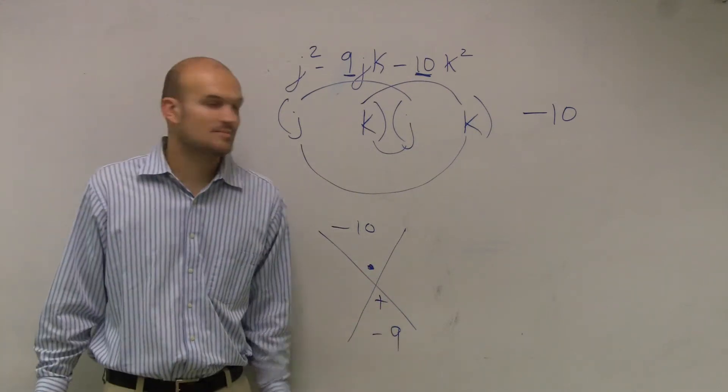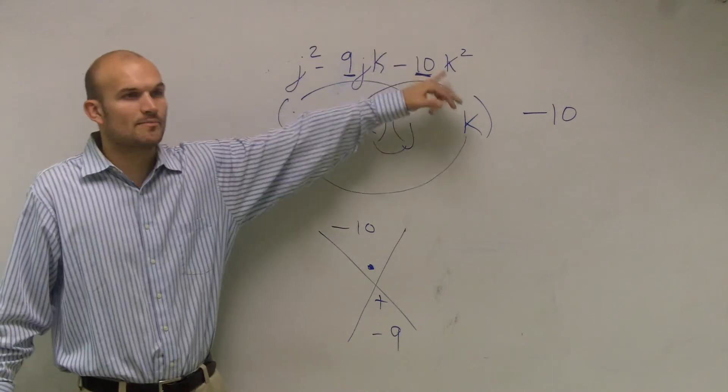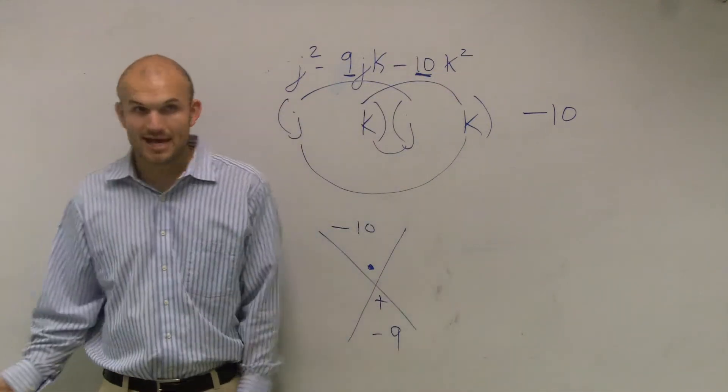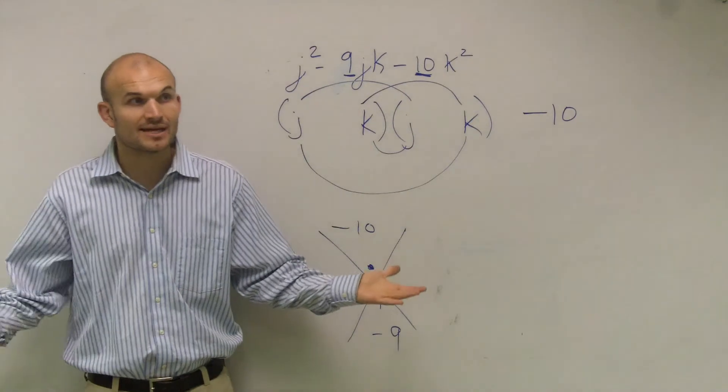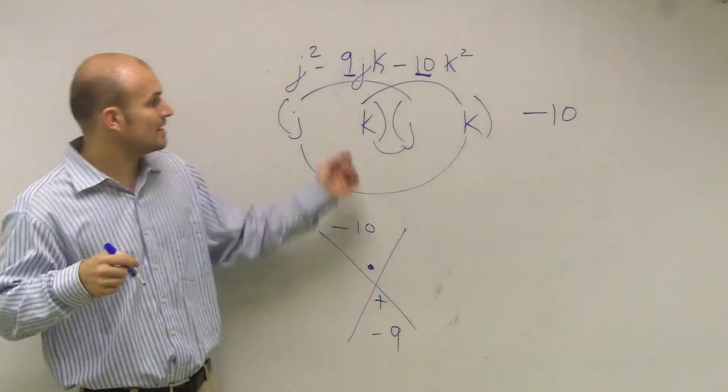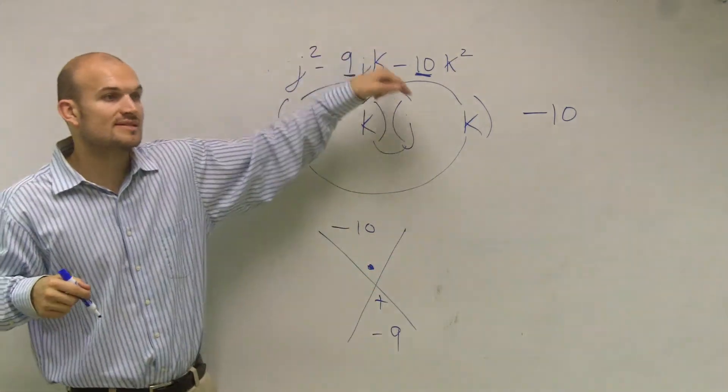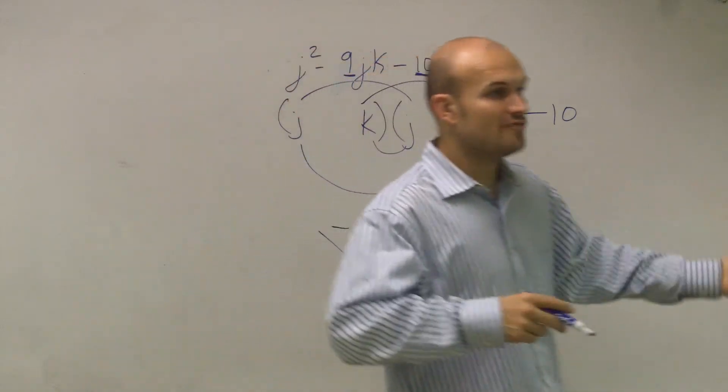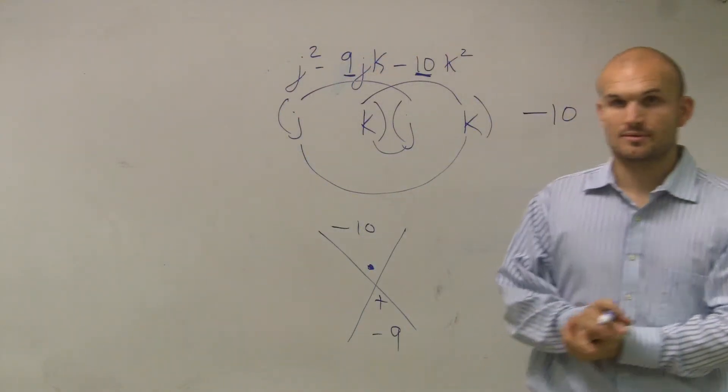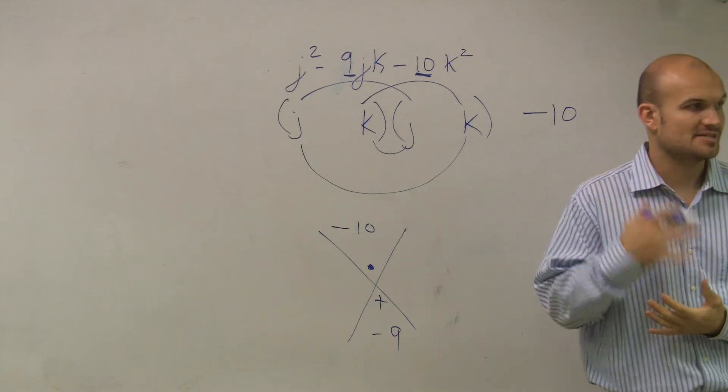Now remember, like I last talked about, whenever you have a negative number, you know that you have to have one positive and one negative. Now the next thing that I know is, since my middle term is negative, the larger of the two factors has to be negative.